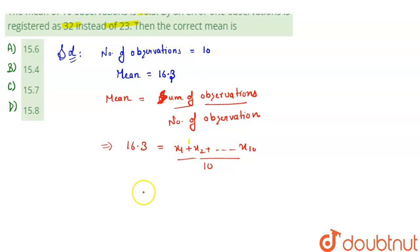registered as 32. So for that, what we'll do, we'll find the sum. The sum of x1 plus x2 plus up to x10 is 16.3 times 10, which is 163. So this is the sum given to us. Now after that, we can say that we'll check